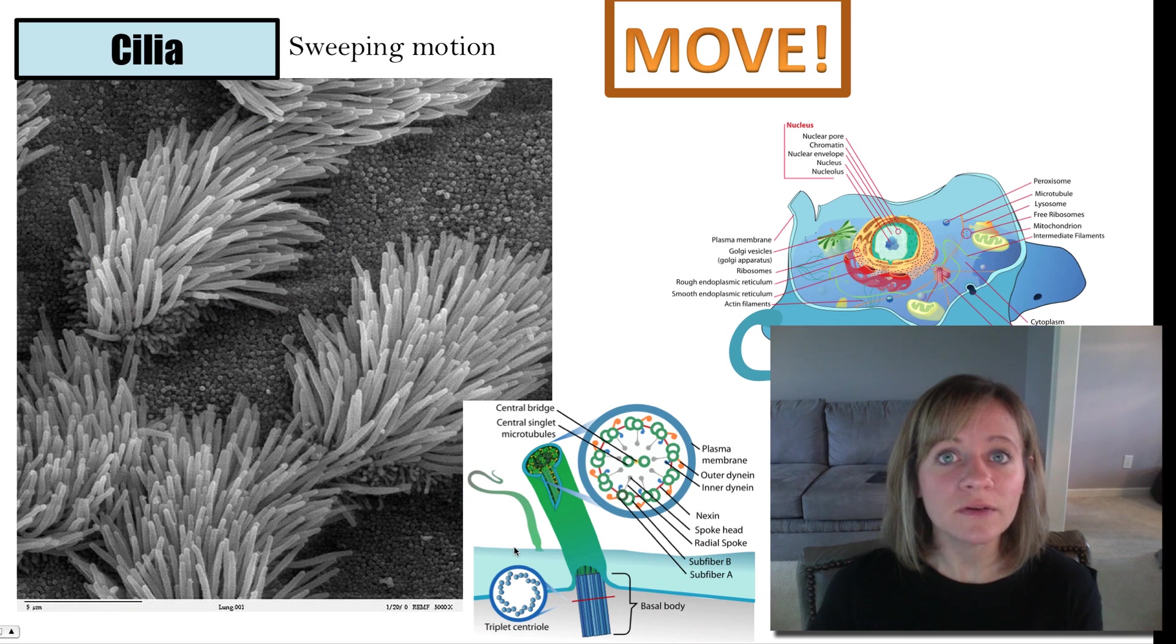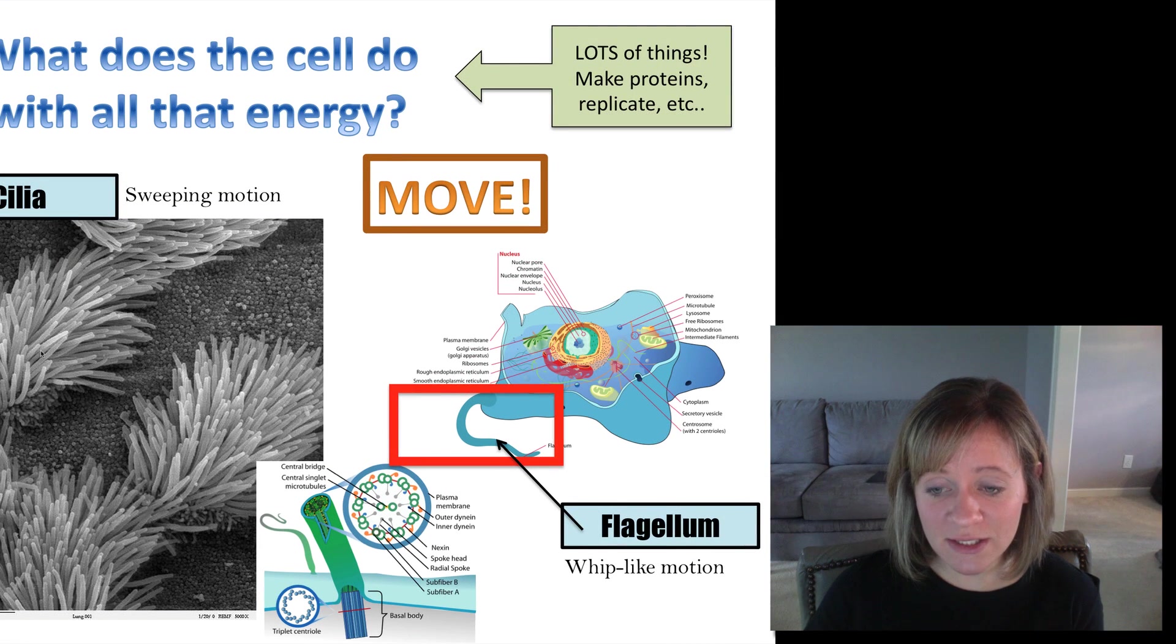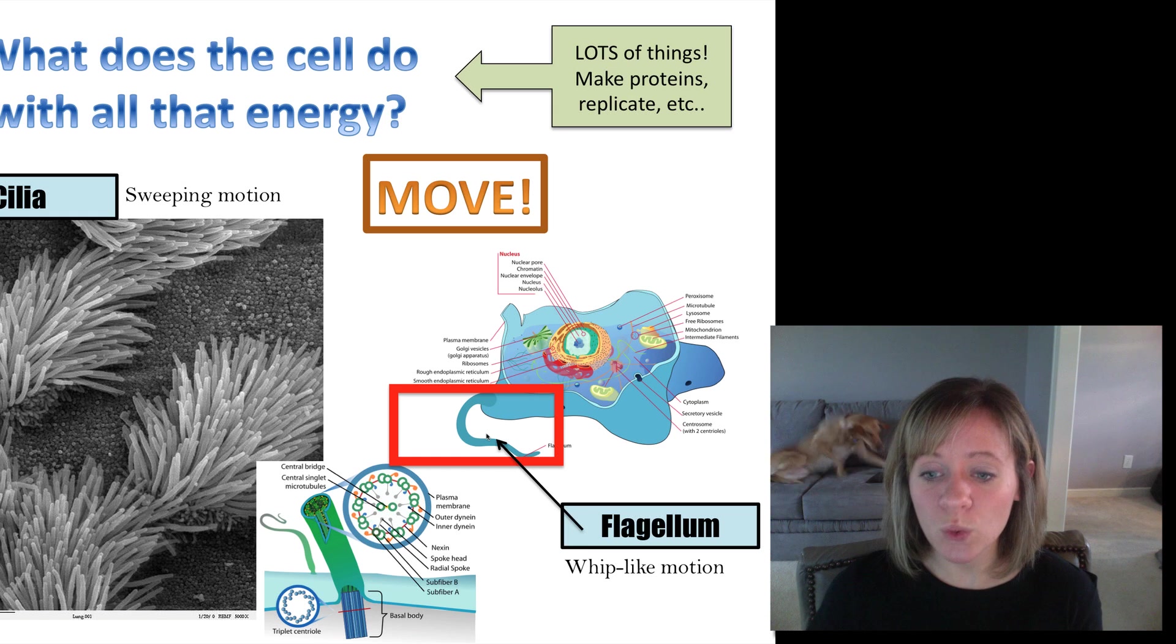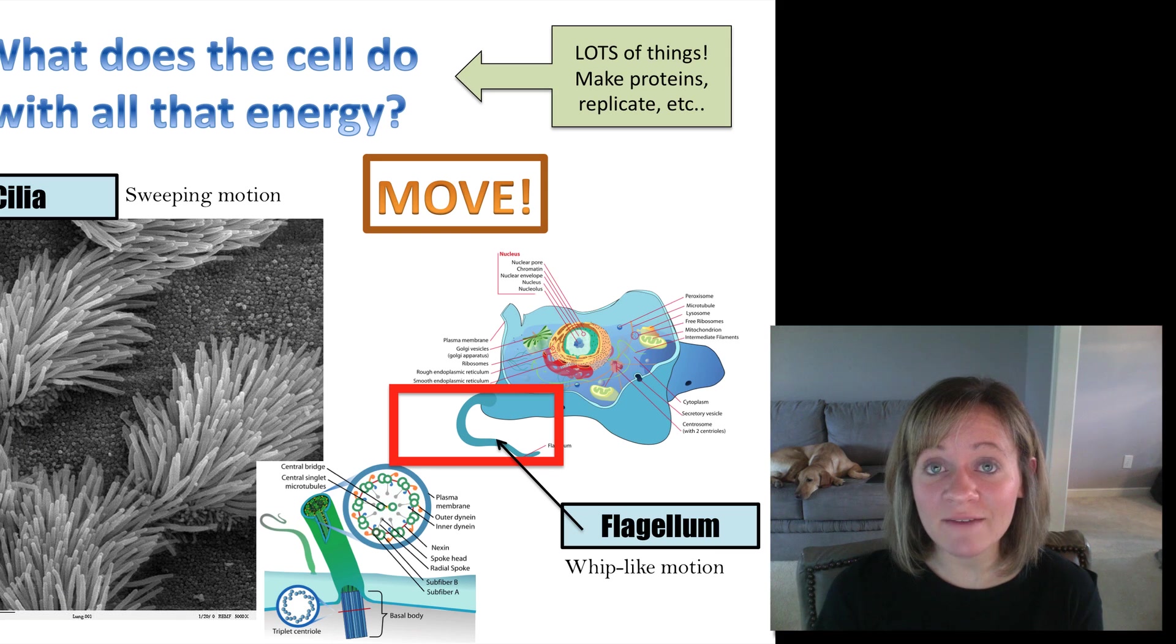Another structure that helps cells move is the flagella, or flagella. And that moves in a whip-like motion. So cells, as you can see, would have many, many, many cilia, thousands. But flagella, a cell might only have one or two. And that functions in a whip-like motion. And that does it for the second video on cell structure and function.